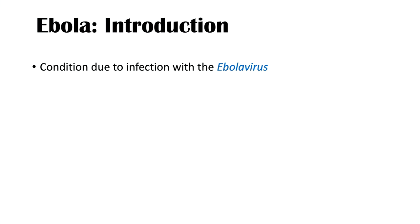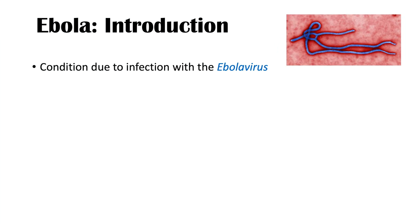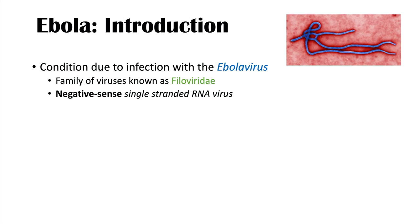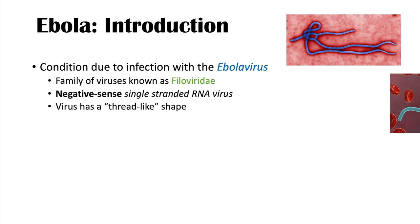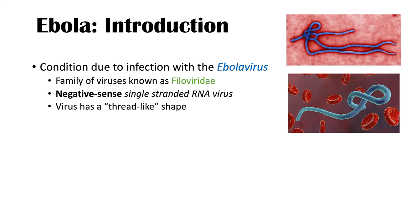Ebola is a condition due to infection with the Ebola virus. Ebola virus is part of a family of viruses known as Filoviridae. It is a negative-sense single-stranded RNA virus and has a thread-like shape, as can be seen in these images.